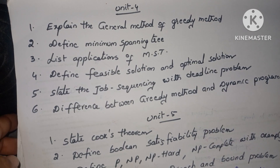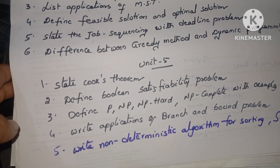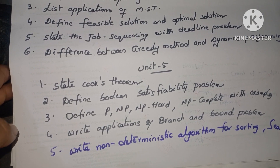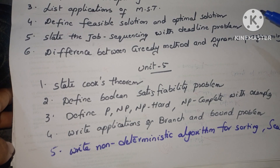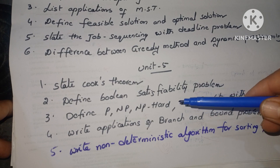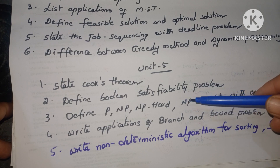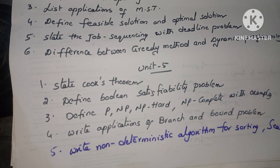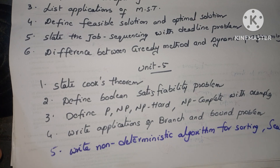Unit five important questions: State Cook's theorem. Define the Boolean satisfiability problem. Define P, NP, NP-hard, and NP-complete with examples. Write the applications of branch and bound problem. And write non-deterministic algorithms for sorting and searching.